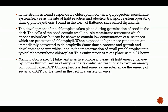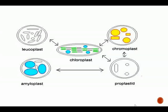A process of growth and development occurs which leads to the transformation of small prochloroplasts into typical photosynthetic chloroplasts. This entire process takes place within 24 hours of germination. The main functions of chloroplasts are to take part in active photosynthesis, to trap light energy for enzymatically controlled reactions, and to form the energy compound ATP. The chloroplast is a dual energy converter since the energy of sugar and ATP can be used in the cell in a variety of ways.